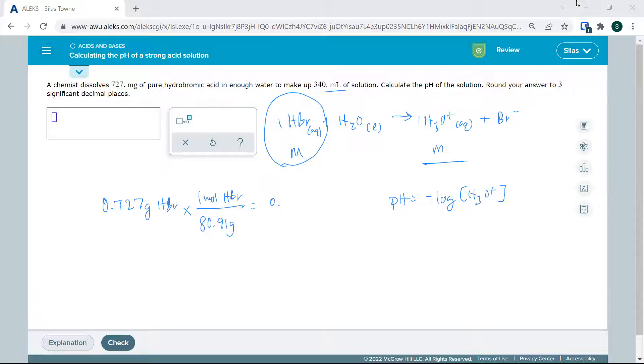That gives me 0.0899 moles. And that is moles. That's not molarity. So I'm going to divide by my 0.340 liters, because it's moles per liter. And that gives me 0.0264 molar.